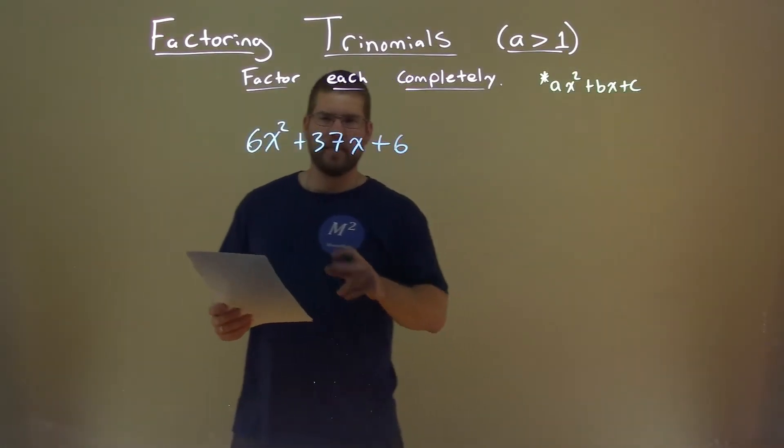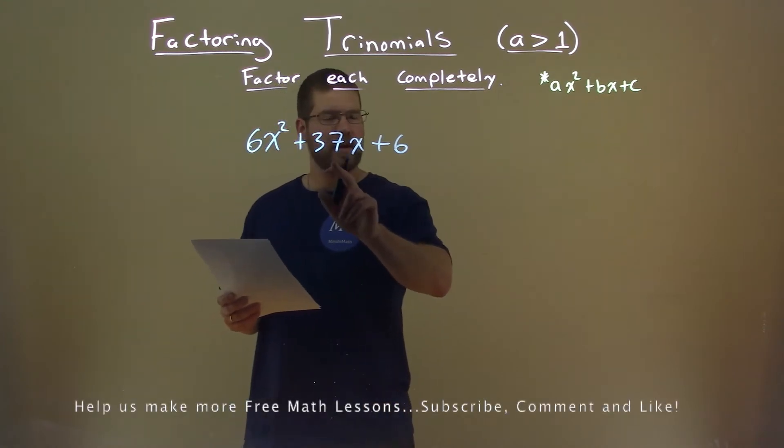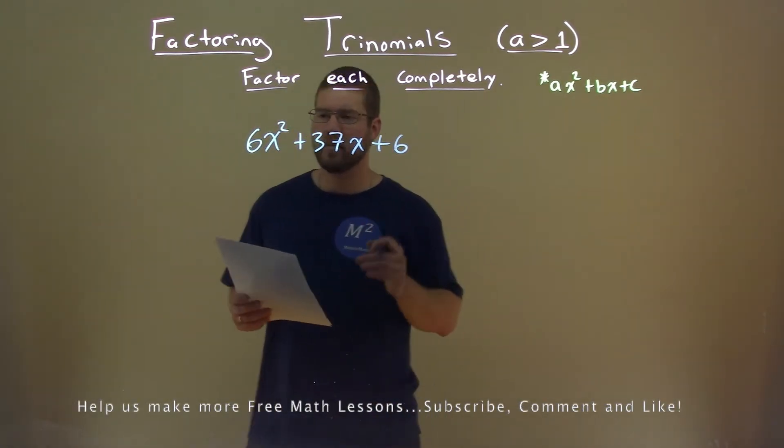We're given this problem right here, 6x squared plus 37x plus 6, and we need to factor this completely.